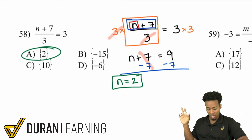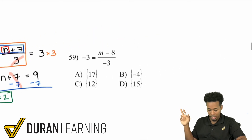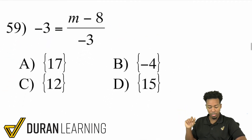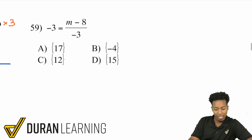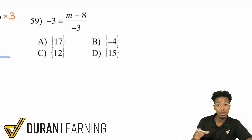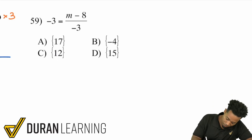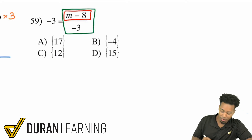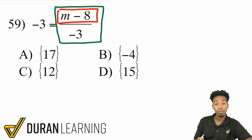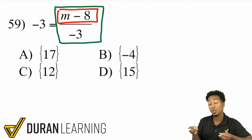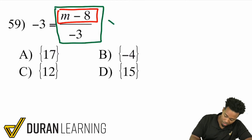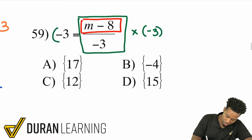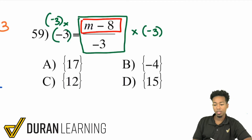Let's look at another example just like this one — number 59. We have the entirety of m minus 8, all being divided by negative 3. So for the first step, understand that working forward we're dividing by negative 3. To get rid of that division by negative 3, we'll multiply both sides by negative 3.